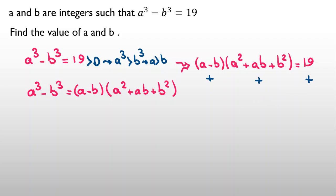Now if I want to consider the cases: one case is (a minus b) equals 1 and (a² plus ab plus b²) equals 19; the other case is (a minus b) equals 19 and (a² plus ab plus b²) equals 1. We have two cases and should consider both.